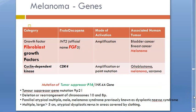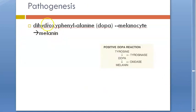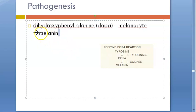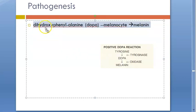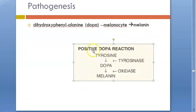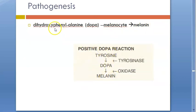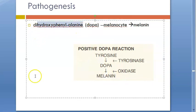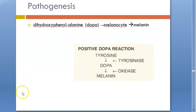So what exactly does a melanocyte do? It makes melanin. How does it make melanin? From dihydroxyphenylalanine — that is DOPA — it makes melanin. This is a positive dopa reaction where you are converting DOPA into melanin. This DOPA is very different from dopamine, because this is not the neurotransmitter.